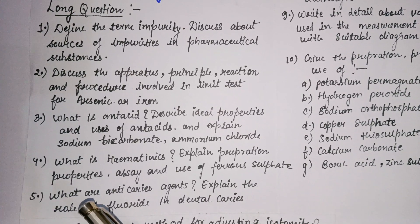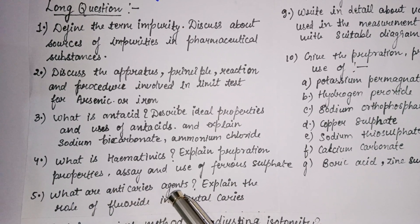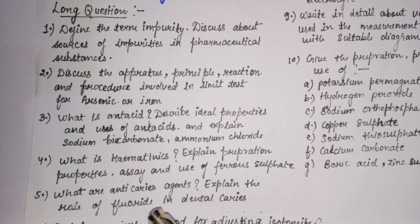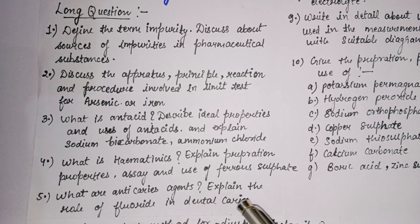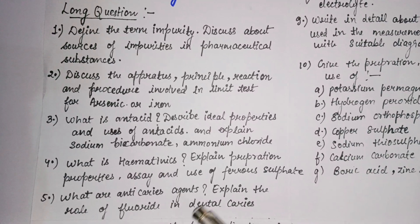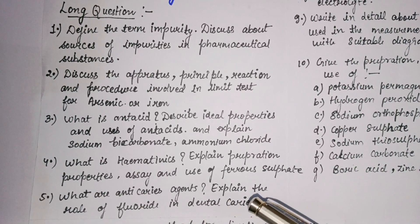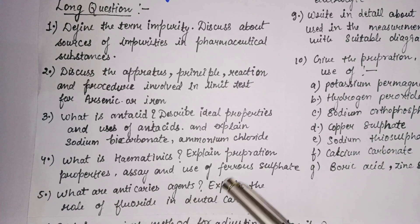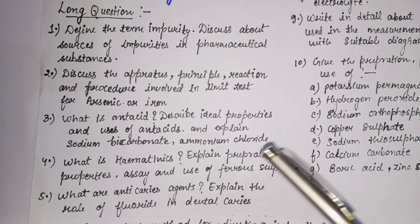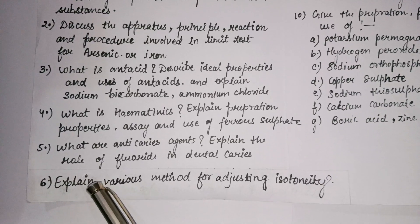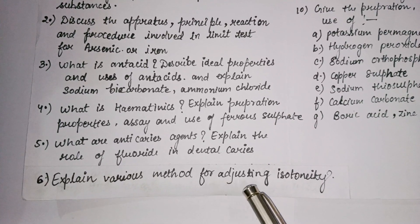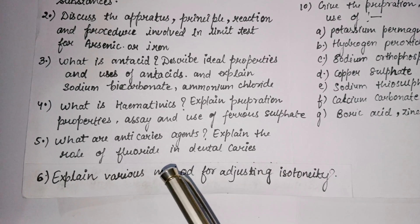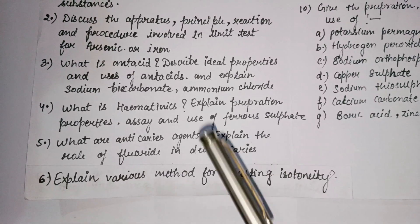The fifth question: what is an antifluoride agent? Explain the role of fluoride in dental caries. The sixth question: explain the various methods for adjusting isotonicity — covering the different methods of isotonicity.